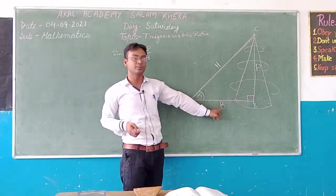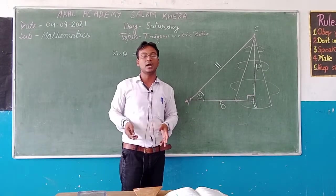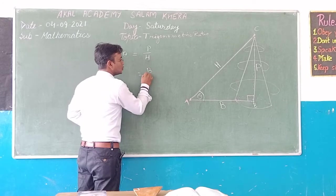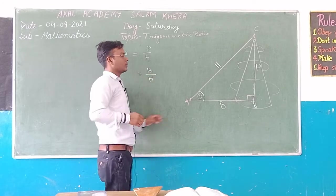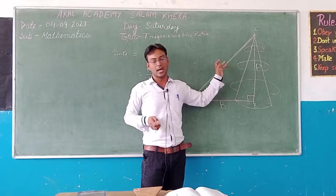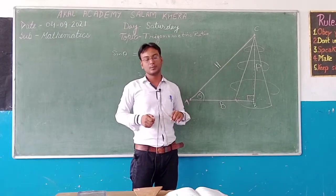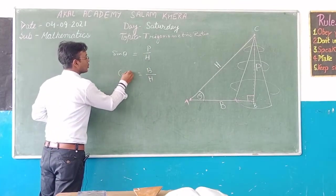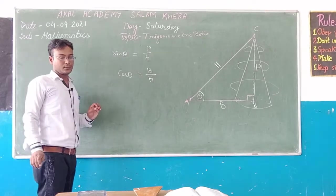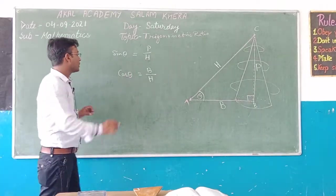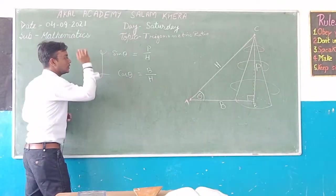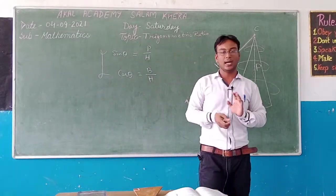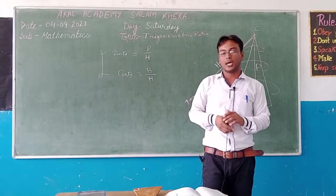Now one more side is left: the base. If you take the ratio of base to hypotenuse, this ratio is known as cos theta. So students, you need to learn these two types of ratios: sin theta and cos theta.